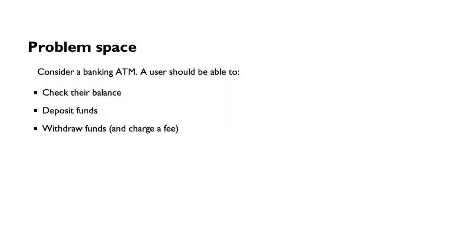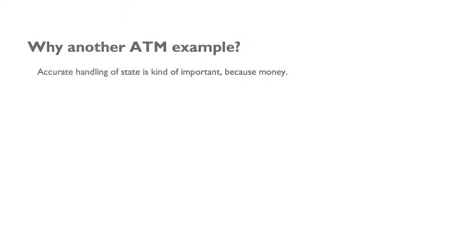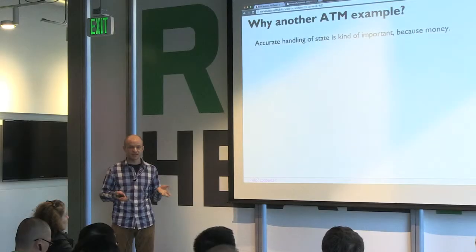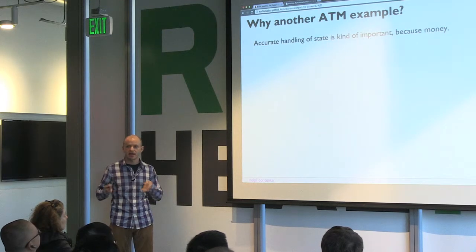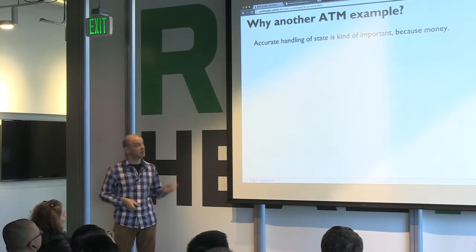Our example real-world problem is an ATM. We're going to write some code for operating an ATM that will let a user check their balance, deposit money, withdraw money, and so forth. ATM examples are kind of common and maybe a little boring, but they're useful here because we're talking about state and handling state in a consistent and predictable way — which is a little important when you're talking about money.